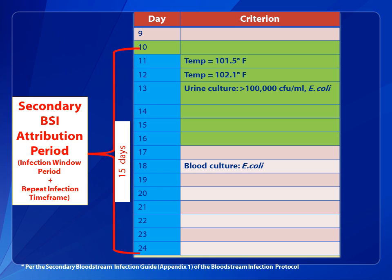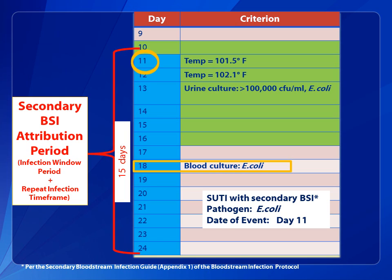Let's return to the SUTI example. A blood culture with a collection date on hospital day 18 — a day that is included in the secondary BSI attribution period — is positive with a pathogen that matches at least one organism found in the urine culture. Therefore, the final determination is a SUTI with a secondary BSI, pathogen E. coli, and date of event day 11.